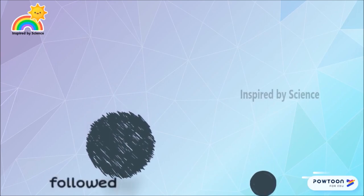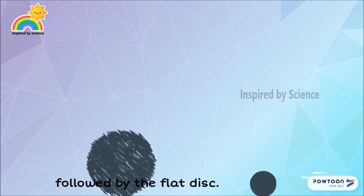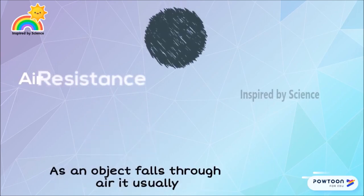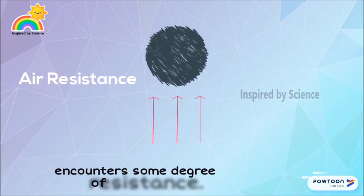The metal ball reaches the ground first, followed by the flat disc. As an object falls through air, it usually encounters some degree of resistance.